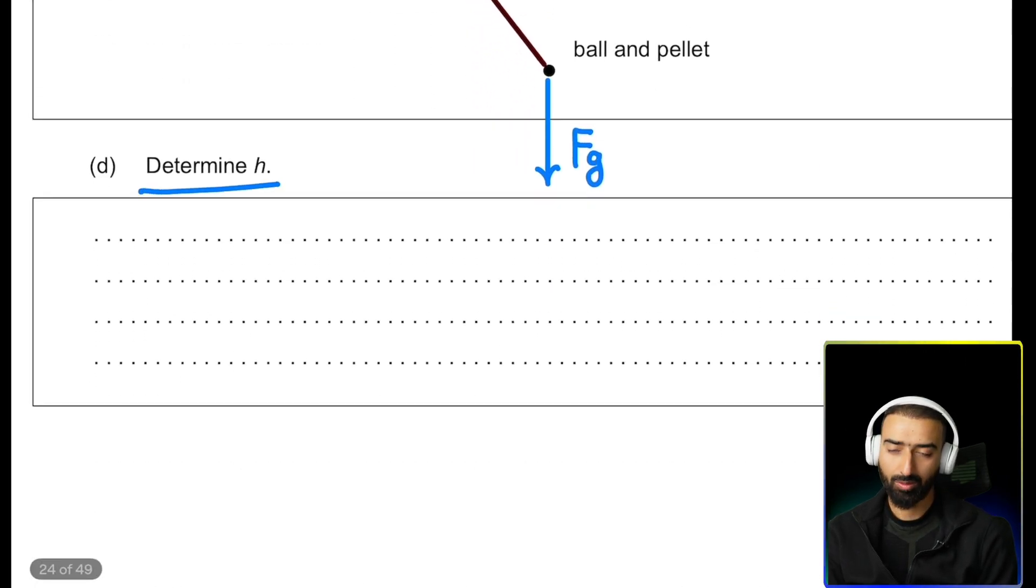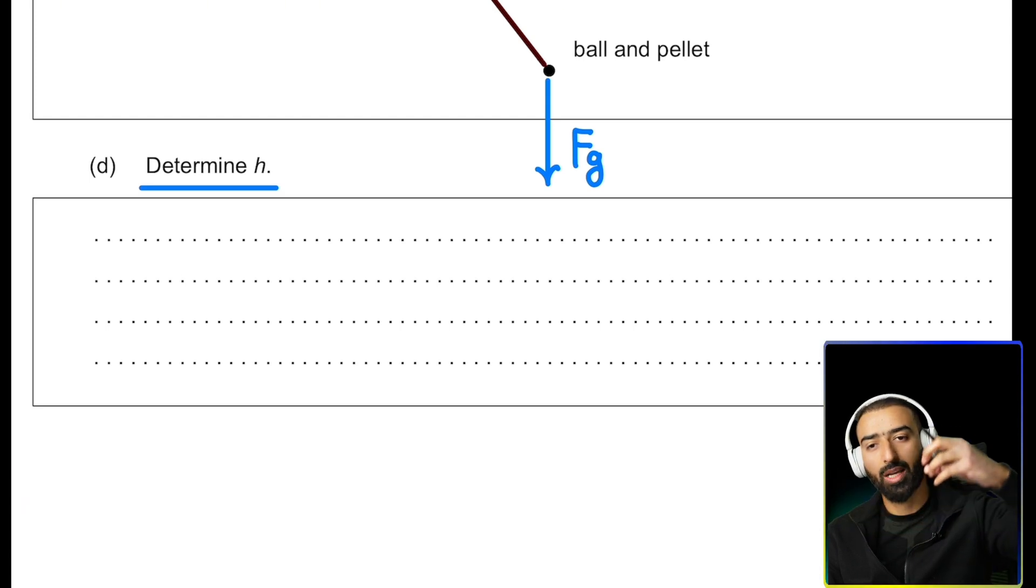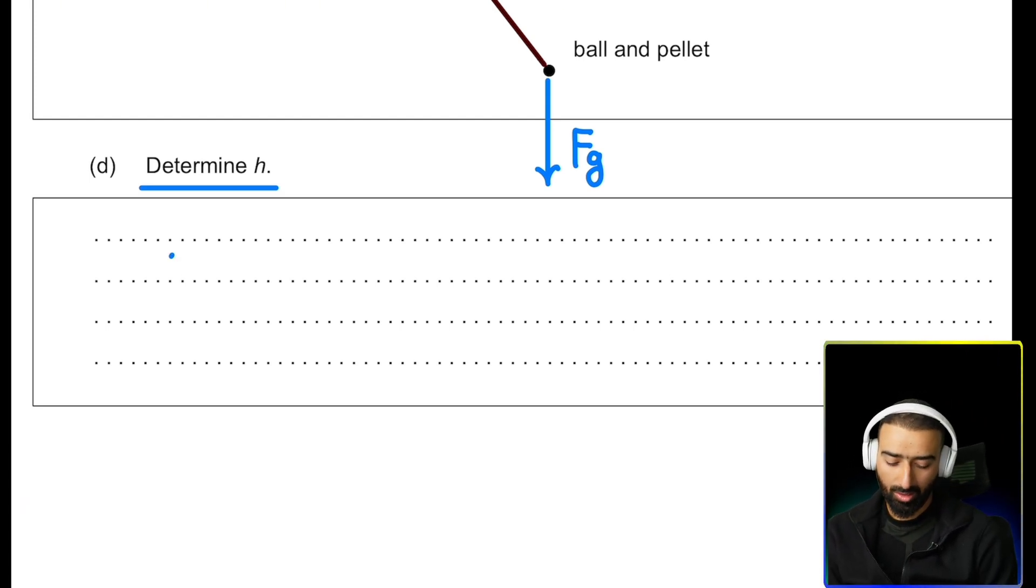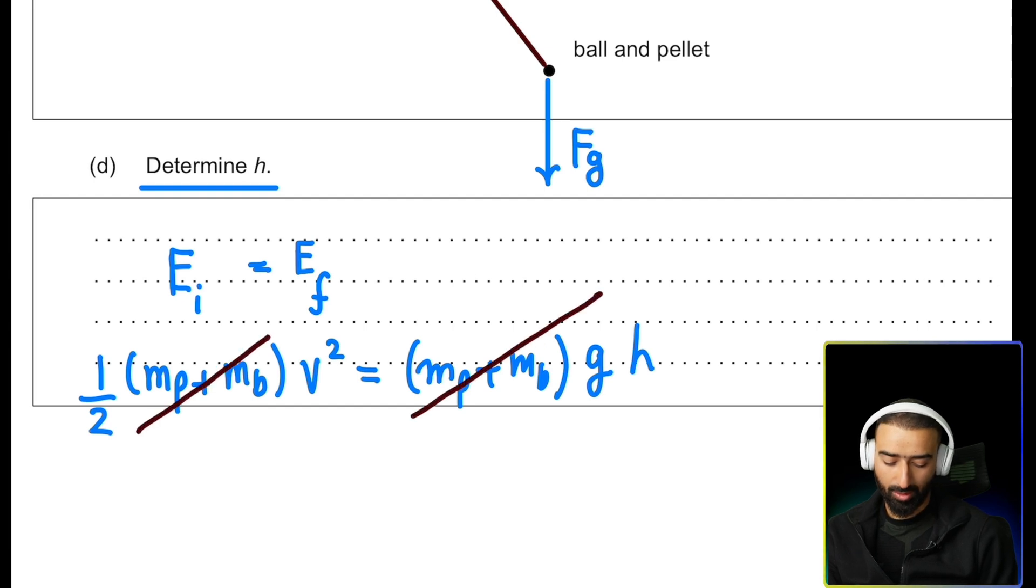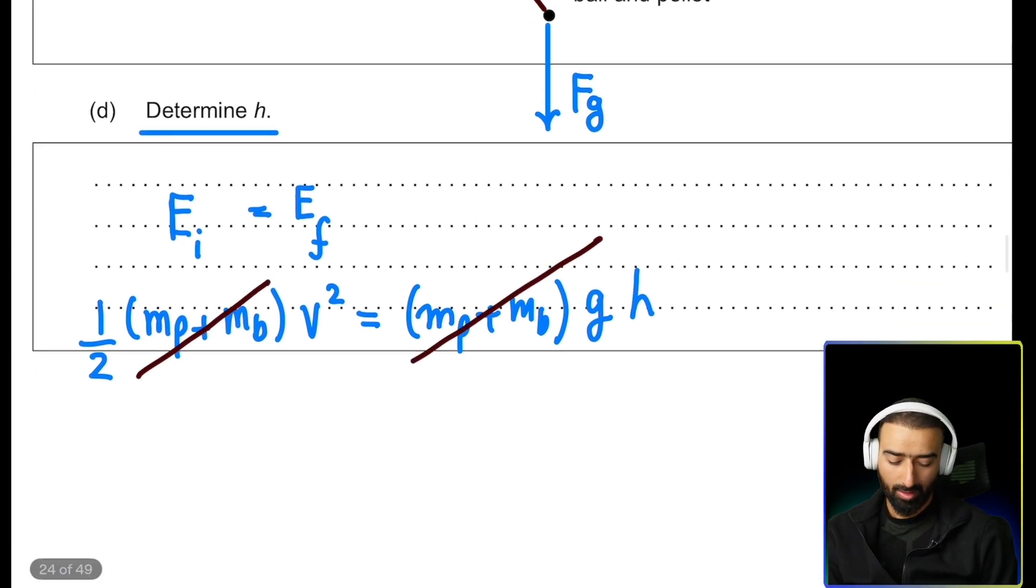Determine h. So we have to figure out the maximum height that the combined system rises. Here we can use energy conservation. We'll say initial energy of the system after the pellet hits is equal to the final energy of the system when it rises to a height h. The initial energy is the kinetic energy that it possesses, half mass of pellet plus mass of ball v square. All of this must be converted to potential energy. Mgh. This entire term goes away and we can solve for h. H turns out to be v square over 2g.